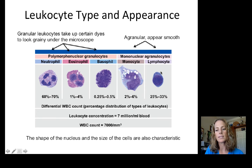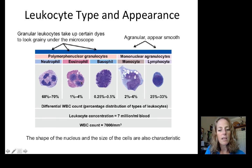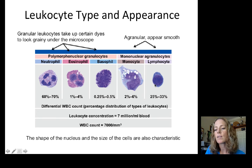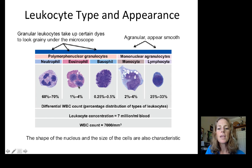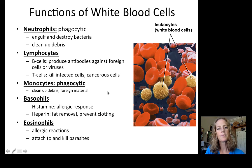Monocytes and lymphocytes appear more smooth when stained. You can also distinguish white blood cells by the shape of the nucleus: neutrophils have multi-lobed, blobby nuclei; lymphocytes have a large circular nucleus filling the cell; monocytes have a pac-man-shaped nucleus; eosinophils have a trilobed nucleus and stain reddish; and basophils have a more filled nucleus and stain very darkly.